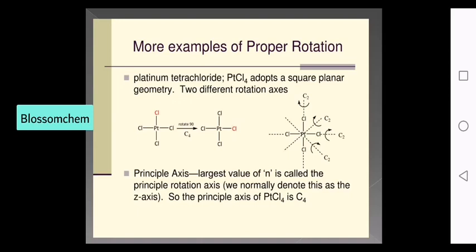The example molecule is platinum tetrachloride (PtCl4). The principal axis is the rotation axis with the largest value of n. Here, the largest value of n is 4, so the principal axis is C4.